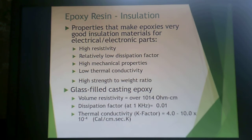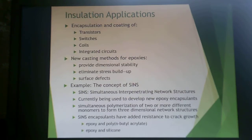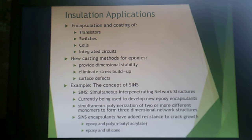In insulation applications, epoxies are valued for high resistivity, low dissipation factor, high mechanical properties, low thermal conductivity, and a high strength-to-weight ratio. Glass-filled casting epoxies provide good volume resistivity, good dissipation factor, and low thermal conductivity. Epoxies are also used for encapsulation and coating of transistors, switches, coils, and integrated circuits. New casting methods provide dimensional stability, eliminate stress buildup, and reduce surface defects. An example is simultaneous interpenetrating network (SIN) structures — simultaneous polymerization of two or more monomers forming a 3D network — providing added resistance to crack growth, used in systems like epoxy/polybutyl acrylate or epoxy/silicone.